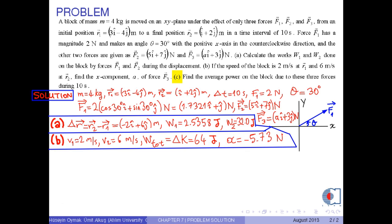Part C: Find the average power on the block due to these three forces during 10 seconds. The average power is P average equals W total over delta T. Then we obtain the average power on the block due to these three forces during 10 seconds as 6.4 watts.